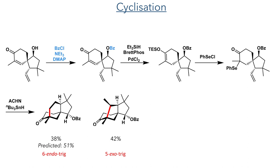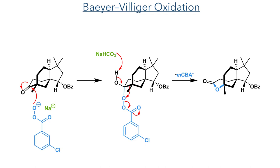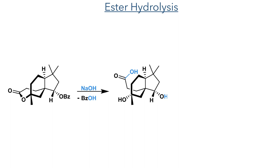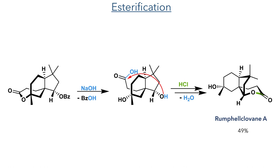As before, the 5-exo-trig product was also formed, this time in a 42% yield. This was then taken forward to a Baeyer-Villiger oxidation. The compound is first reacted with MCPBA and sodium bicarbonate. The MCPBA anion attacks the carbonyl and the resulting peroxyhemiacetal is then deprotonated by another equivalent of bicarbonate. Instead of eliminating the peroxybenzoate, a rearrangement occurs where a carbon-carbon bond migrates to form a carbon-oxygen bond, producing an ester upon the elimination of meta-chlorobenzoate. This was taken forward to an ester hydrolysis using sodium hydroxide, which hydrolyzed both the pendant benzyl ester and the cyclic ester formed by the Baeyer-Villiger oxidation. Reacting this compound with hydrochloric acid promoted an intramolecular esterification between the newly revealed alcohol and the carboxylic acid, forming Rumpfyl-Clovane-A in a 49% yield.